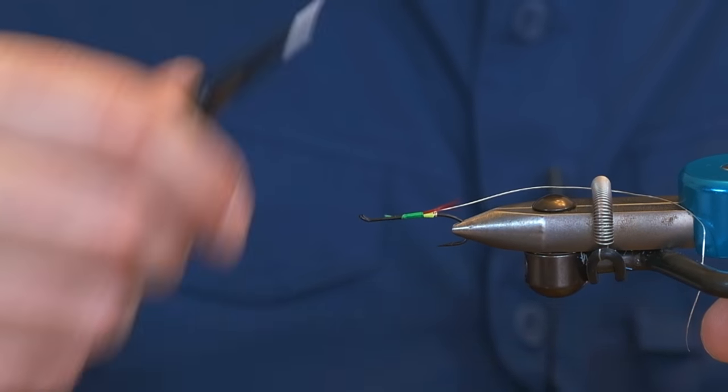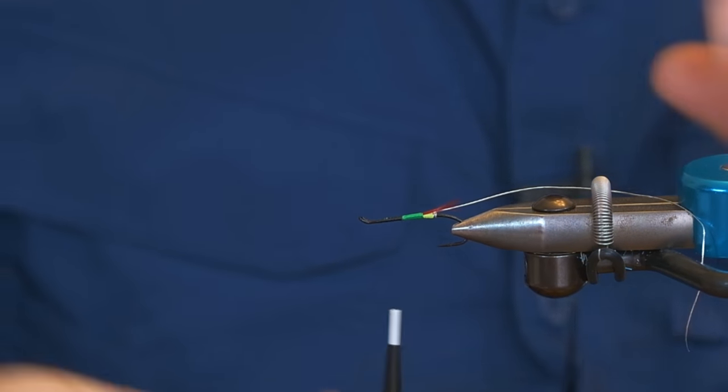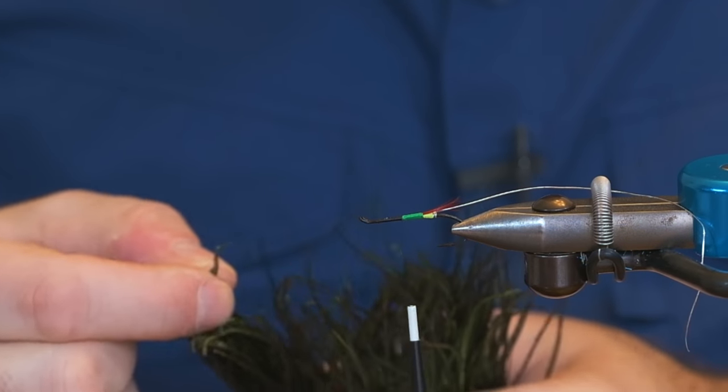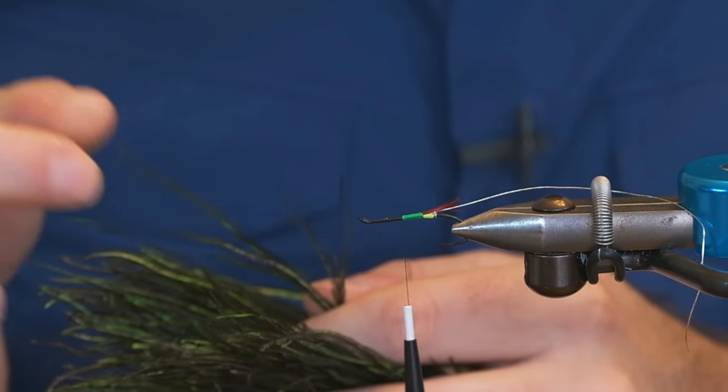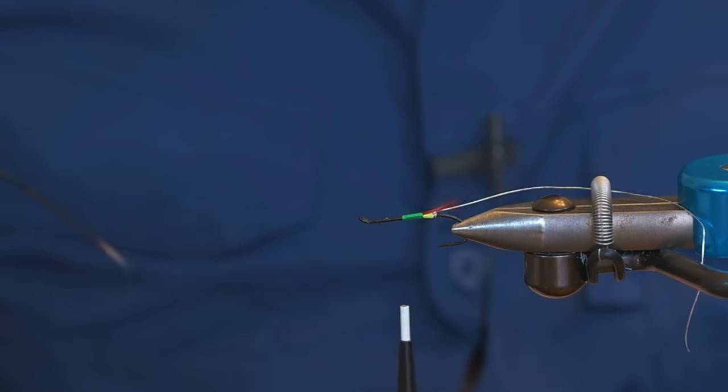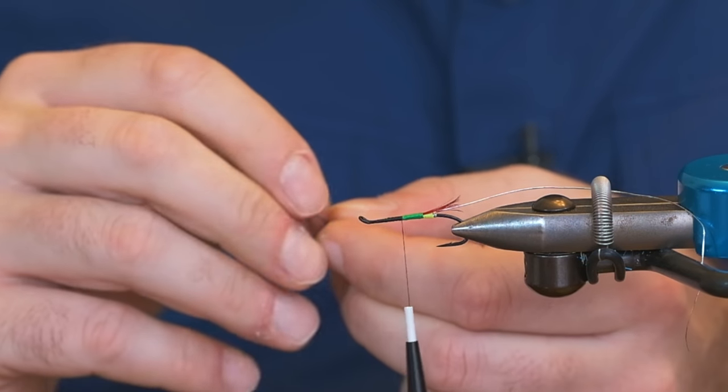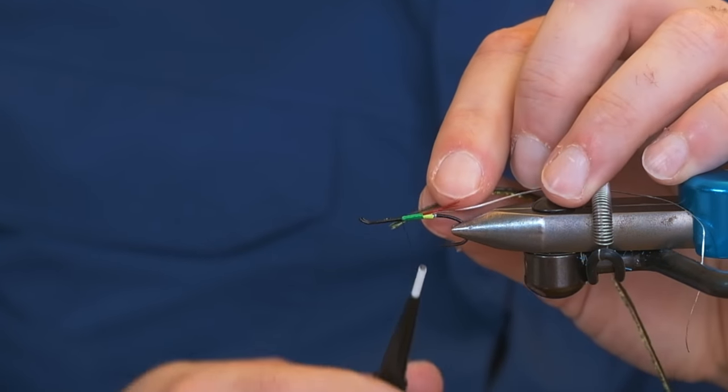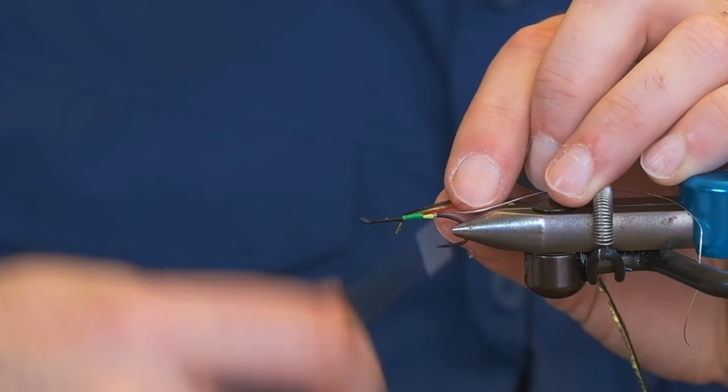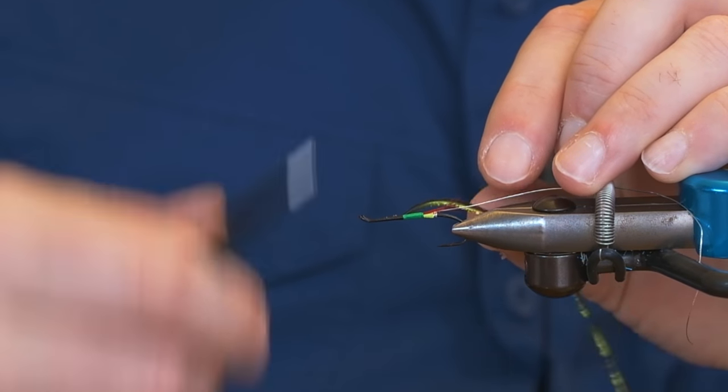The next step is to put our peacock on. I put peacock on a little bit different than I see other people do it. And peacock is such a brittle material. If you have peacock on your fly, I find, and maybe it's just my personal experience, but it's usually the first thing to come off of a fly when you hook a fish. So I've started doing things a little bit differently with my peacock and I'll show you how I do it now. It's a bit of a cheat, but that's all right.